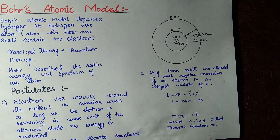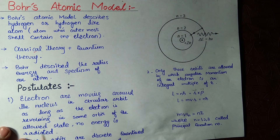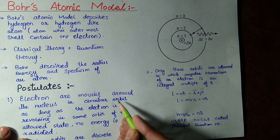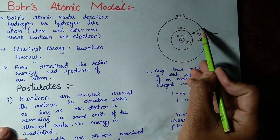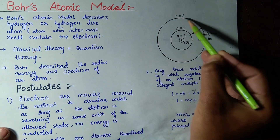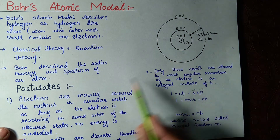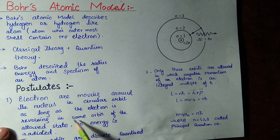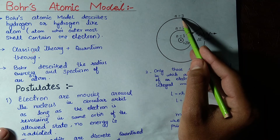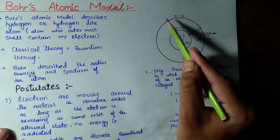Now let's move on to the postulates. The first postulate states that electrons move around the nucleus in a circular orbit. This circular path is called an orbit. As long as the electron is revolving in the same orbit — say the quantum number n equals 3 — the electron will emit no energy while moving in that same orbit.